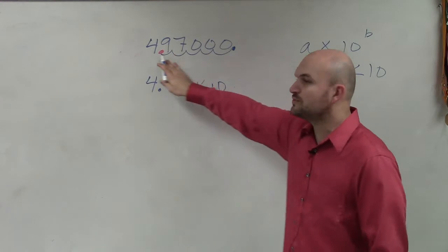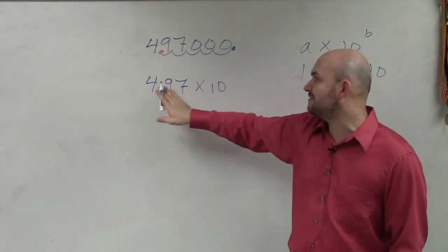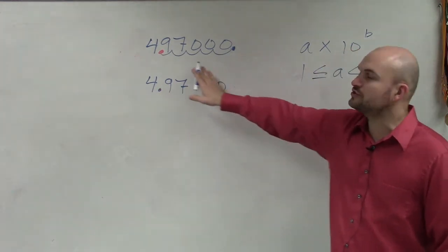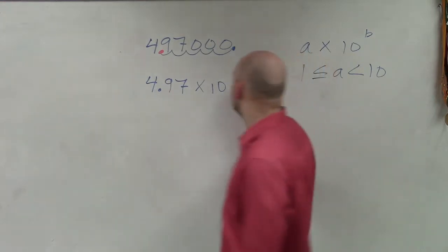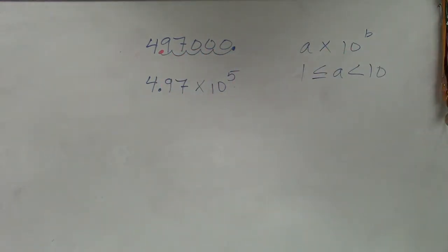So since we're moving our decimal point to take it back, if here is our problem in scientific notation, if we need to move it to the right to go back to our original, that's going to be a positive 5, OK?